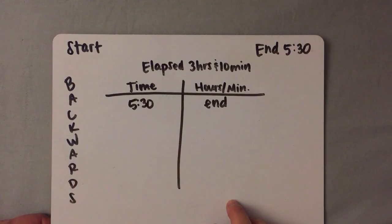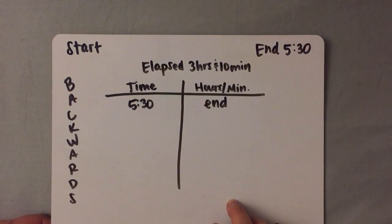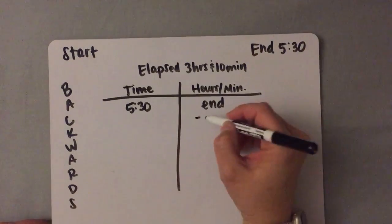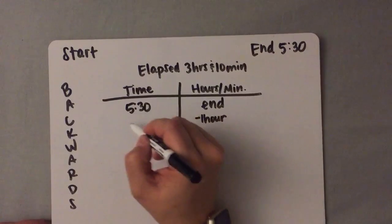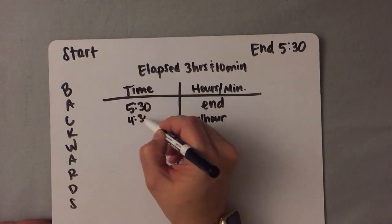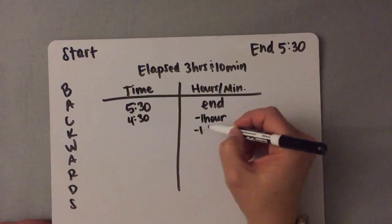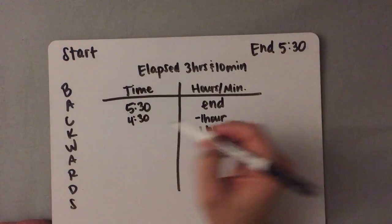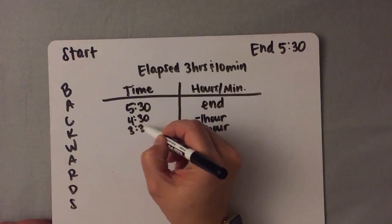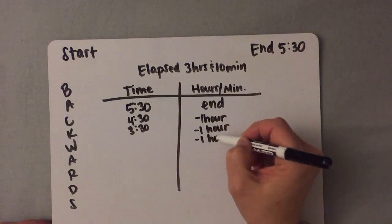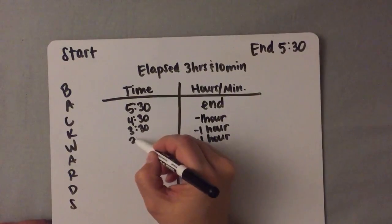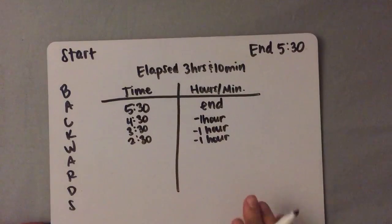Just like with finding end time, it's easiest to work with hours first, and you are going to count back by hours. So one hour before 5:30 is 4:30. One hour before 4:30 is 3:30. One hour before 3:30 is 2:30.